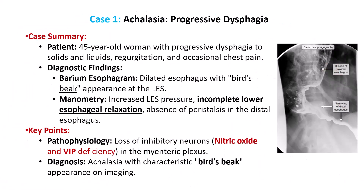Let's begin with a 45-year-old woman who presents with progressive dysphagia to both solids and liquids, regurgitation of undigested food, and occasional chest pain. She has no history of heartburn or gastrointestinal bleeding. A barium esophagram reveals a dilated esophagus with a bird's beak appearance at the lower esophageal sphincter, and esophageal manometry shows increased LES pressure with incomplete relaxation and absence of peristalsis in the distal esophagus.